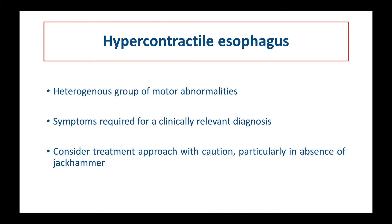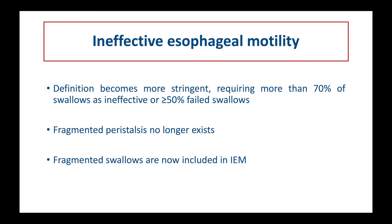However, invasive treatments should be considered with caution. The diagnosis of ineffective esophageal motility becomes more stringent with the third version of the Chicago classification, as more than 70% of ineffective swallows or more than 50% of failed swallows are required. Fragmented swallows are included in ineffective esophageal motility, and the diagnosis of fragmented peristalsis no longer exists.